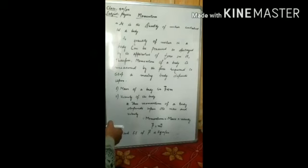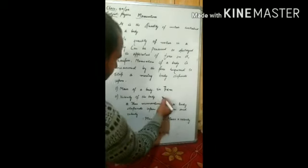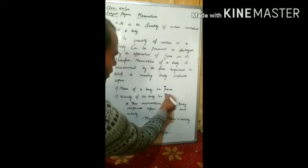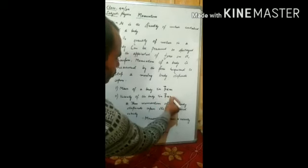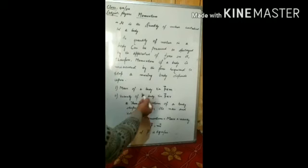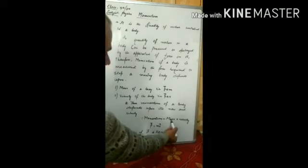That's why we say that the velocity of a body is also responsible for the momentum of a body. So here we can represent it as momentum is also directly proportional to velocity. Or in a nutshell, we can say the momentum of a body depends upon its mass and velocity. It is measured as a product of mass into velocity.